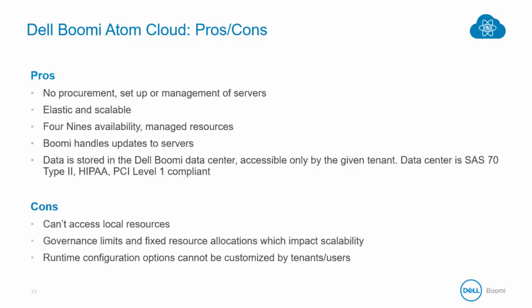Here is a summary of the Atom Cloud. Pros include: no setup or management of servers; it is elastic and scalable to your business needs; there are four nines of availability — 99.99% uptime — and resources are managed for you. Boomi handles the updates and refreshes of the servers and runtimes. Application and server upgrades are performed during maintenance windows published by Dell Boomi. Data is stored in the Dell Boomi data center, accessible only by the given tenant, and that data center is SAS 70 Type 2, HIPAA, and PCI Level 1 compliant.